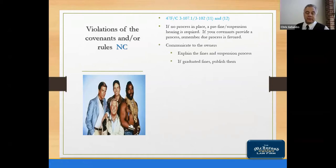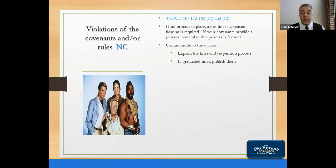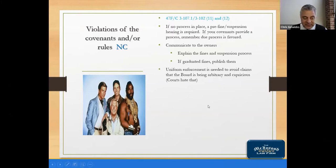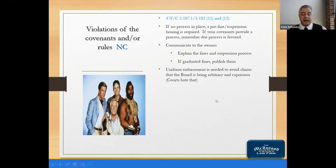Communicate with your owners during these proceedings. If you send them a hearing notice and they come to the hearing, explain the fine and suspension process to them. Publish such processes to the community periodically, whether in a newsletter or on the website. If you have graduated fines — for example, $5 a day on first violation, $10 on the second, $50 on the third — publish those. Uniform enforcement is needed because we don't want to appear arbitrary and capricious. Courts hate undocumented, inconsistent enforcement decisions.